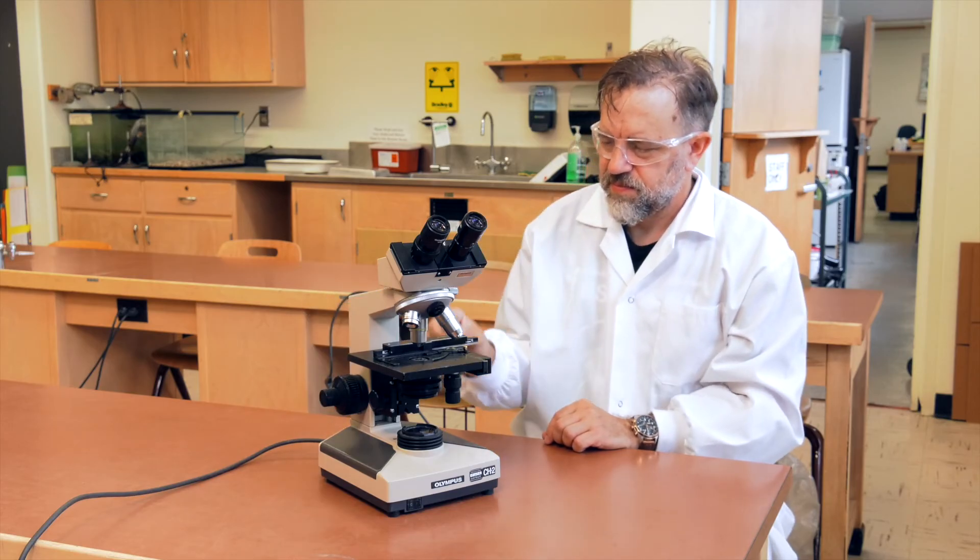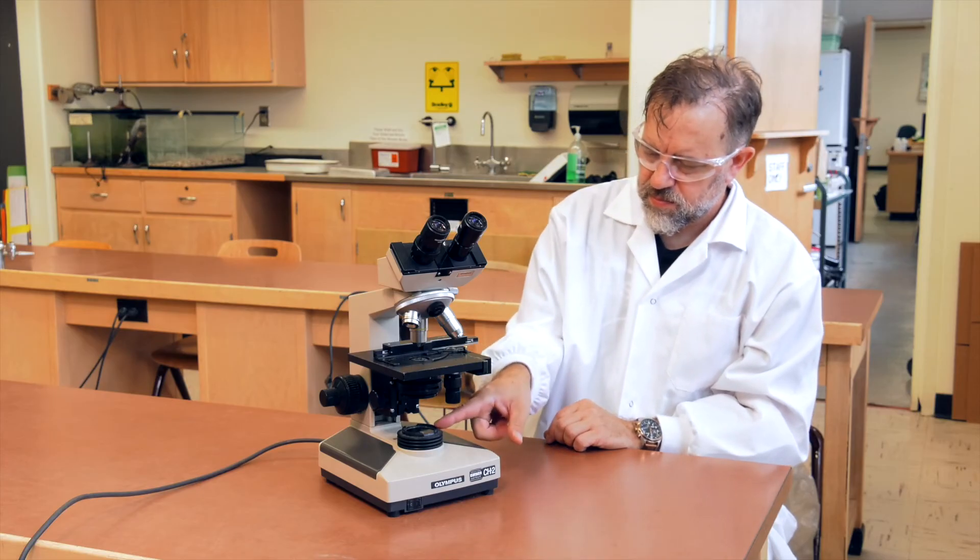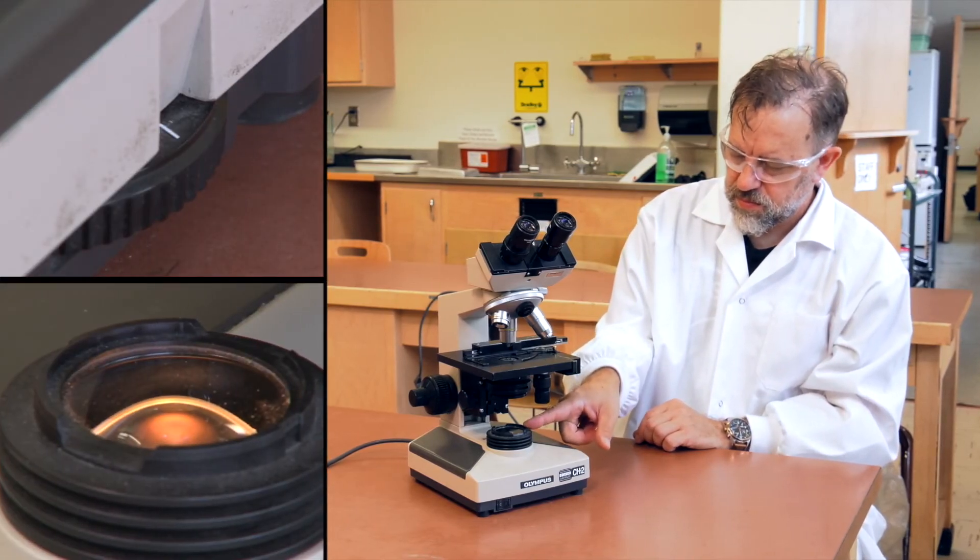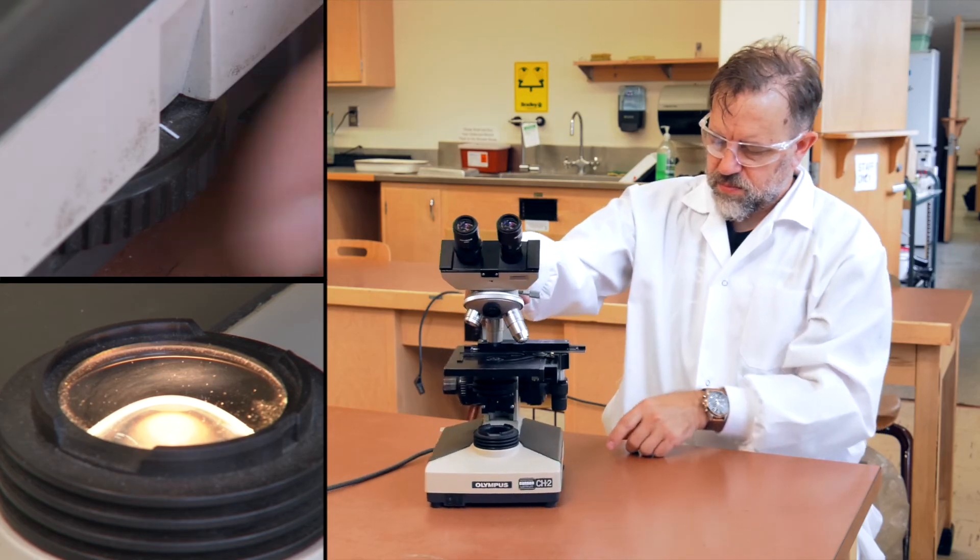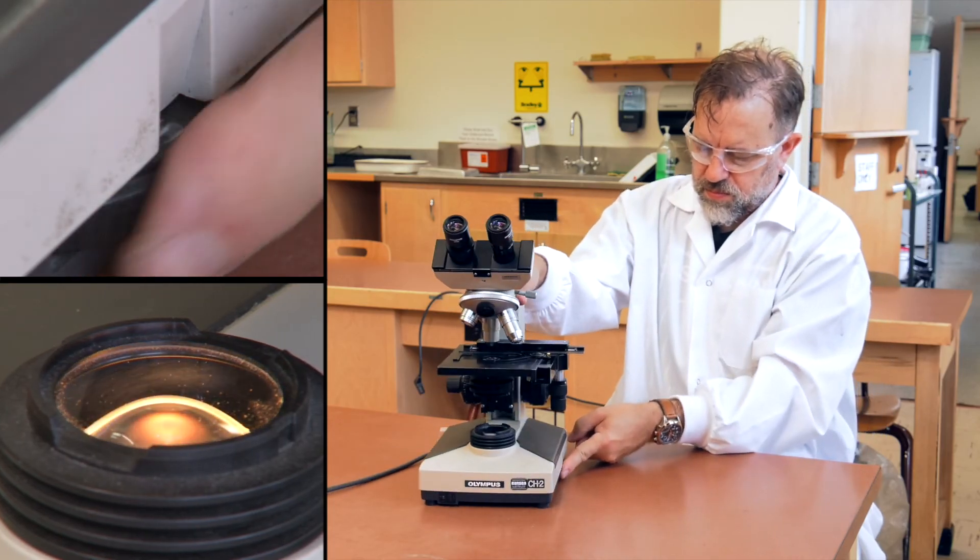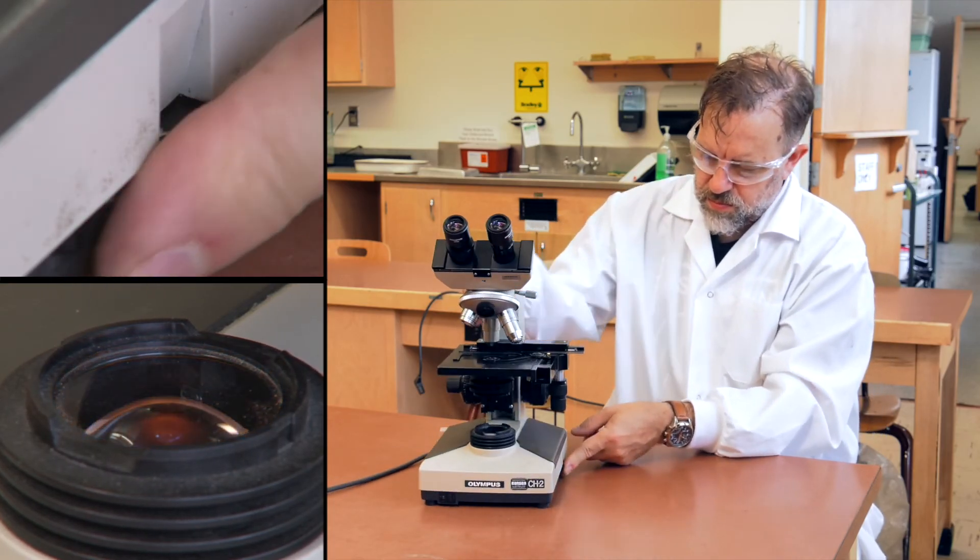In the base of the microscope are the light source and the light intensity control. The control directly adjusts the brightness of your light source. Your head TA will tell you the appropriate level for your model of microscope.